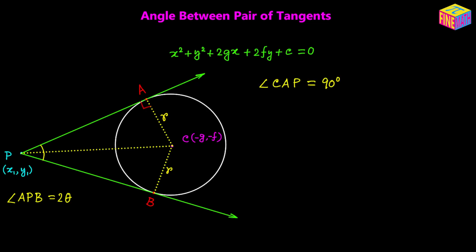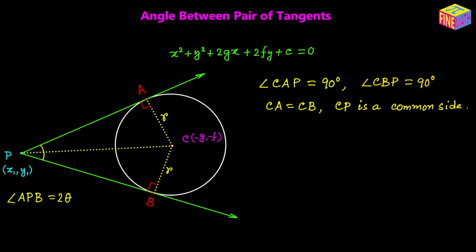So angle CAP equals 90 degrees and similarly angle CBP equals 90 degrees. Now let's think about these two triangles: triangle CAP and triangle CBP. CA equals CB, and CP is a common side which is the hypotenuse for the two right triangles.